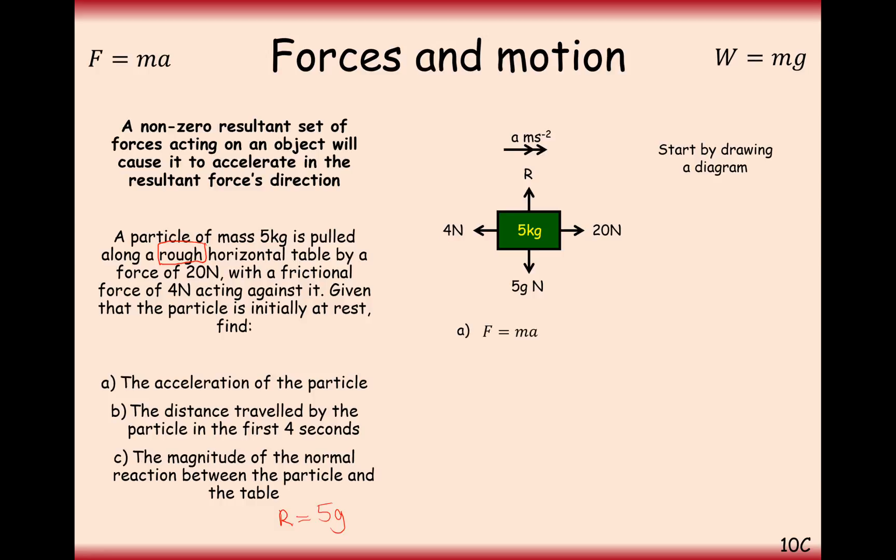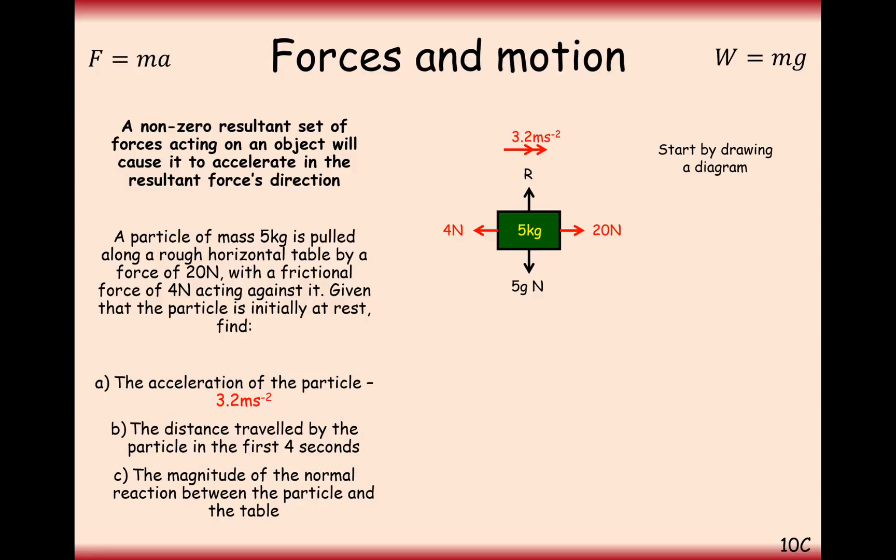When we're looking for the acceleration, we're going to resolve horizontally. The first thing I would write here is resolving horizontally. Then it's 20, because that's in the positive direction, take away 4, because that's in the negative direction, equals 5, which is the mass, times acceleration, which is A that we don't know. So it's 16 equals 5A, divide by the 5, and we get 3.2 metres per second squared.